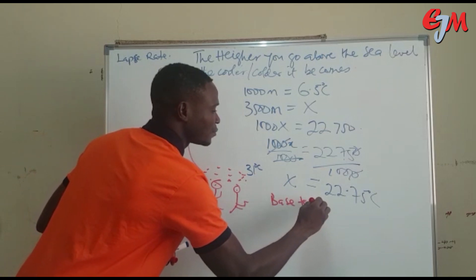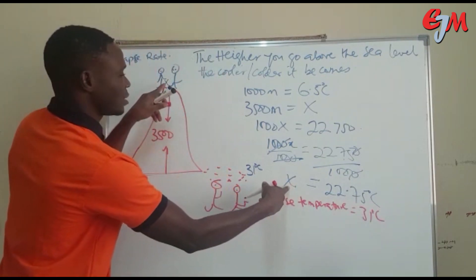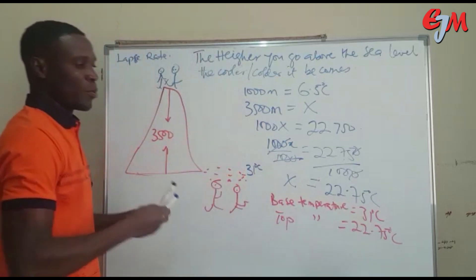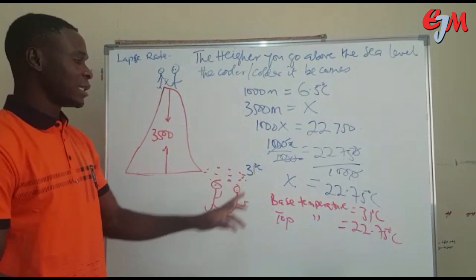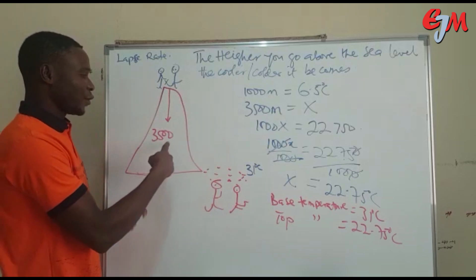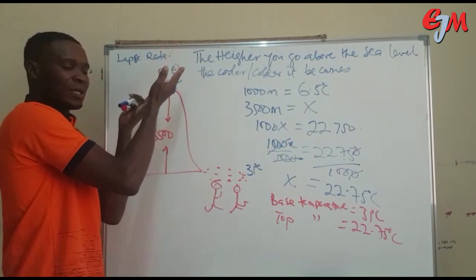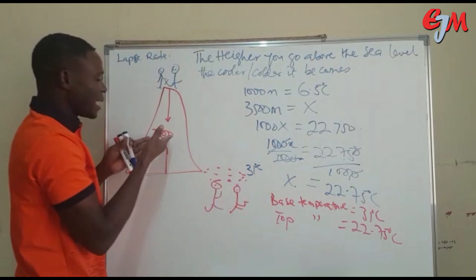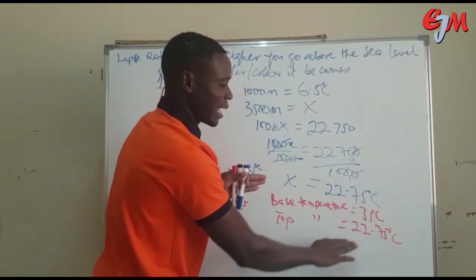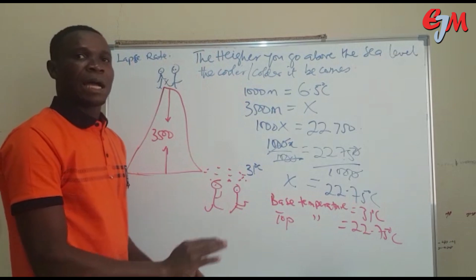With a base temperature of 1 degree Celsius and a temperature drop of 22.75 degrees Celsius at the top, you find out that it is hotter at the base and cooler at the top. This has automatically proven that the higher you go above sea level, the cooler the temperature becomes. If you increase the height, say to 4,000 meters, the temperature drop increases further, confirming that the higher you go, the cooler it gets.